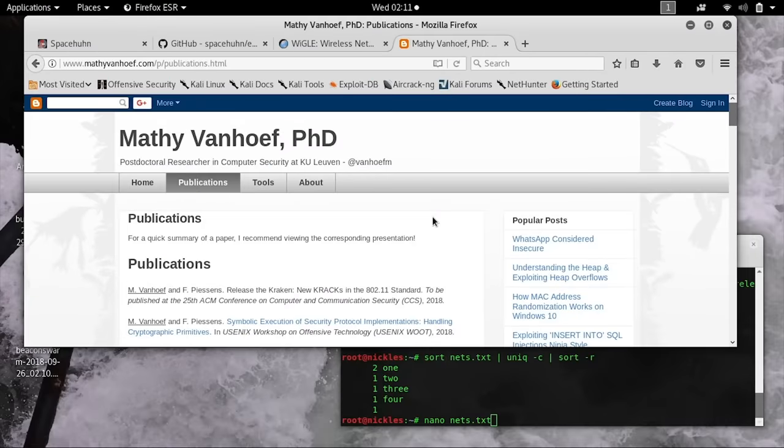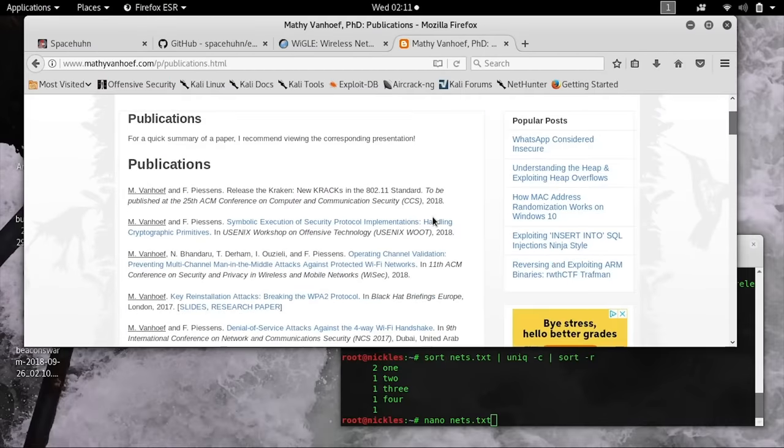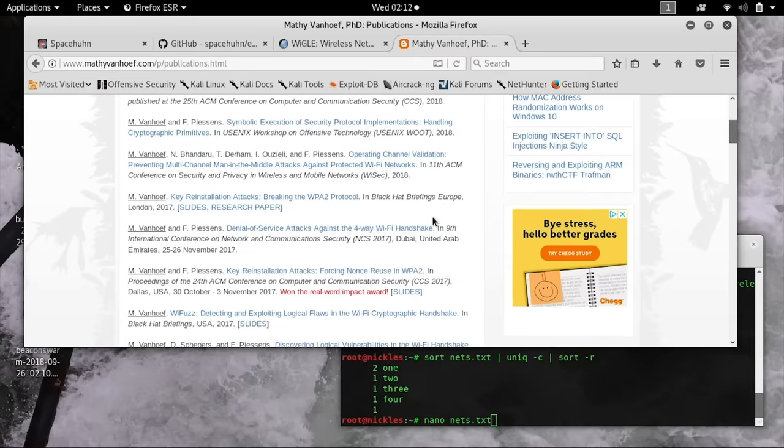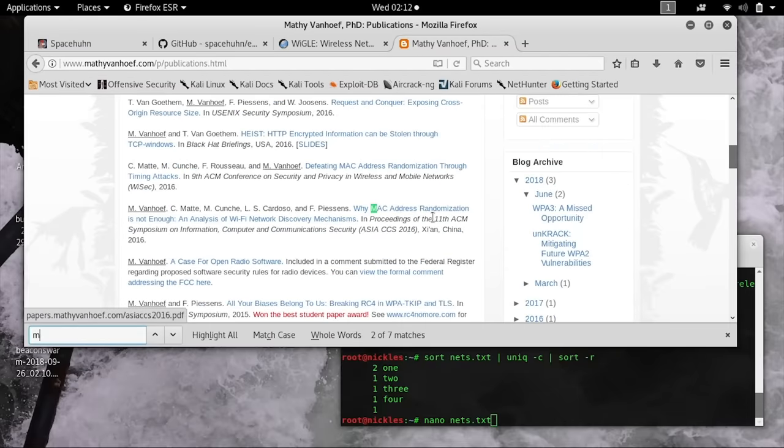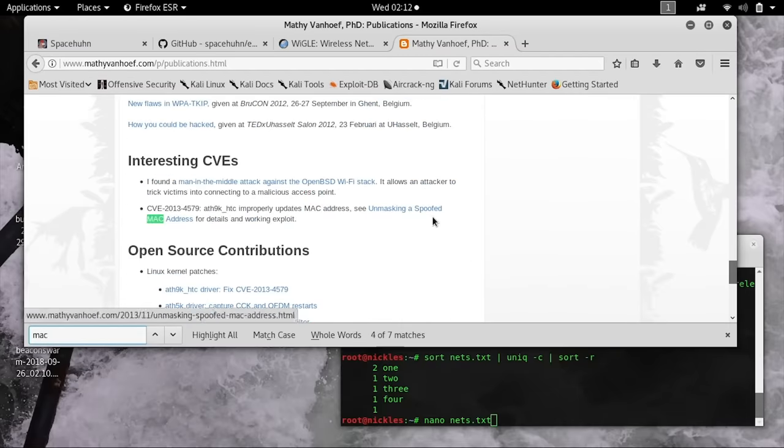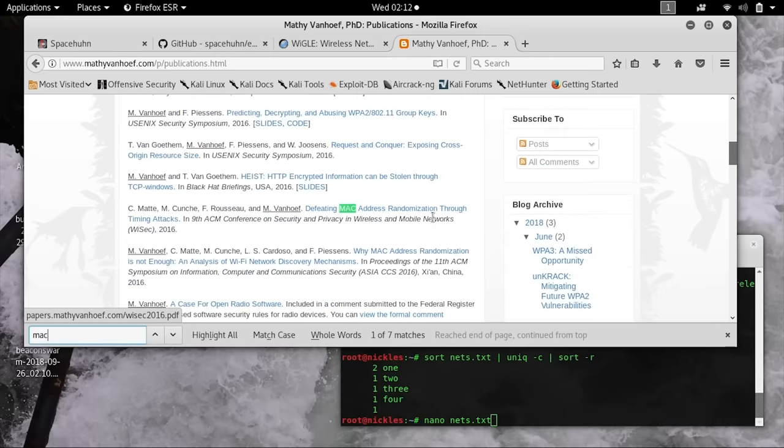Before we get started, I want to point out this research is based on a paper by Matthew Vanhoef, and you can go to his website if you want to check out his paper. The paper is called Why MAC Address Randomization is Not Enough, An Analysis of Wi-Fi Network Discovery Mechanisms. In this paper, Matthew goes over how he's able to use a fake access point to decloak different networks.